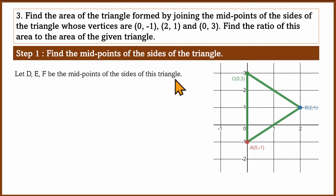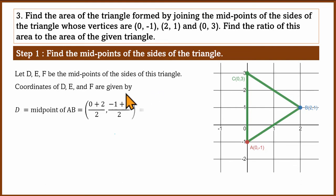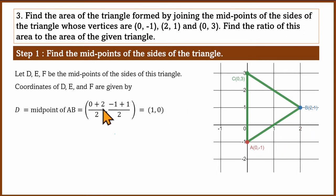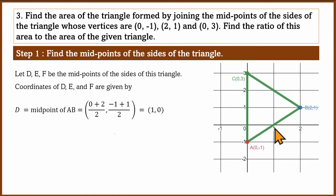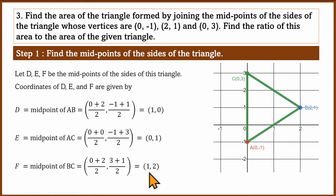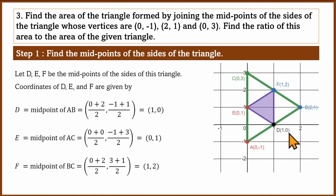For example, D is the midpoint of AB. A is (0, −1) and B is (2, 1). So x = (0 + 2)/2 = 1, and y = (−1 + 1)/2 = 0. So D = (1, 0). Similarly, E = (0, 1) and F = (1, 2). These are the three midpoints.